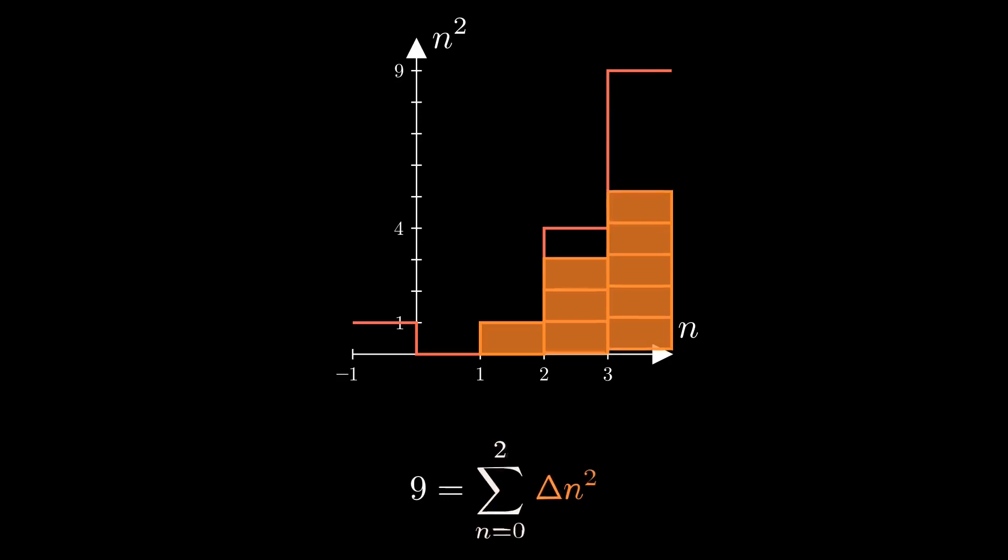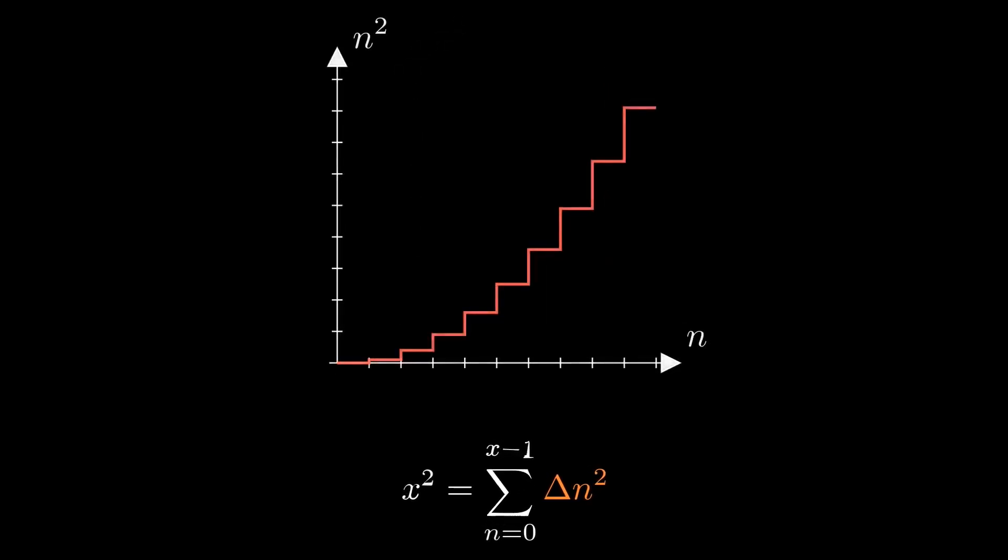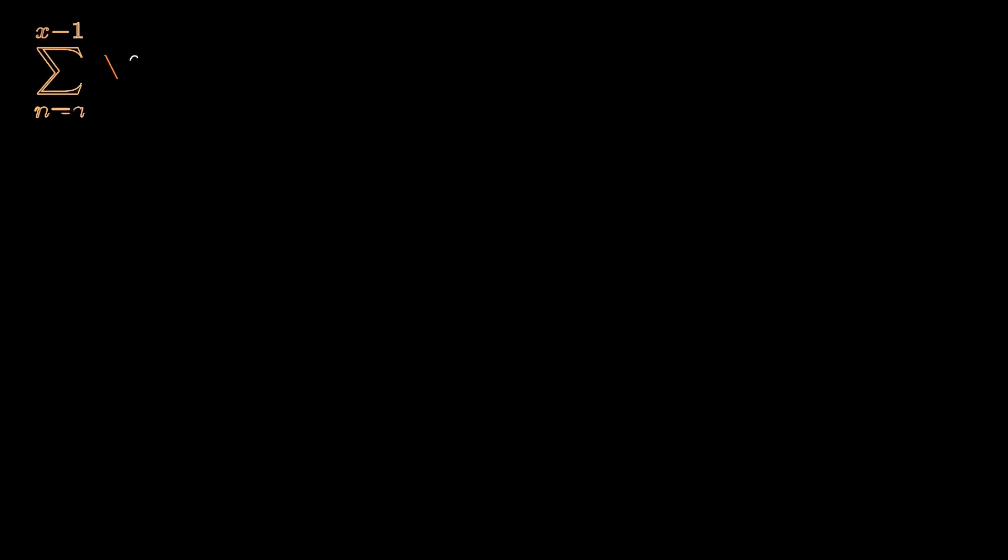That is, the sum from 0 to 2 of 2n plus 1. And for any positive integer x, we can express x squared as the sum from 0 to x minus 1 of 2n plus 1. We can show this more generally by telescoping.